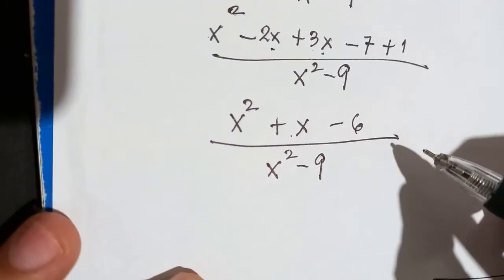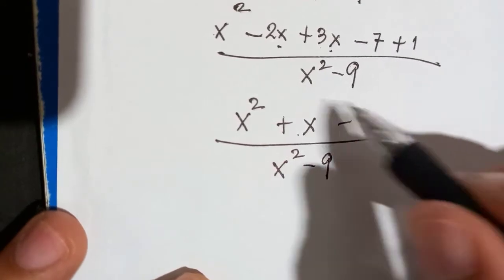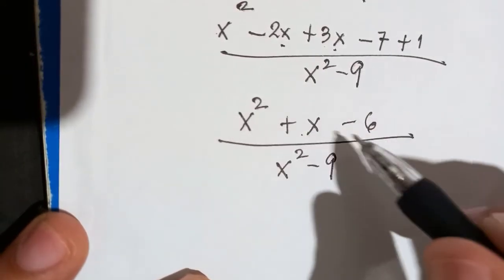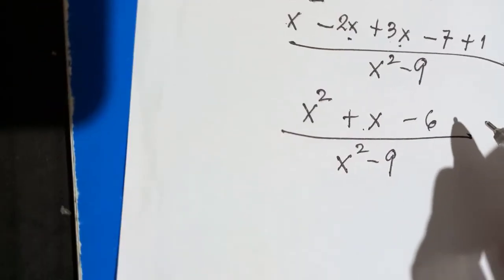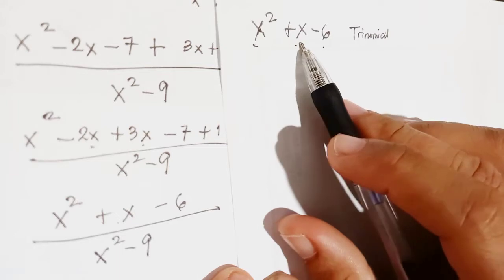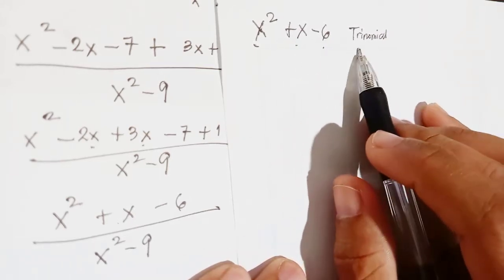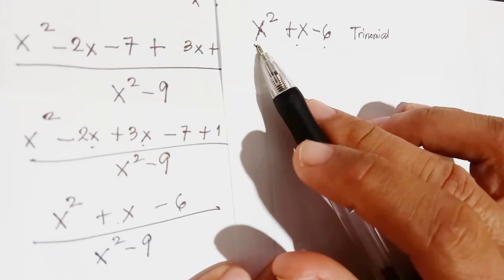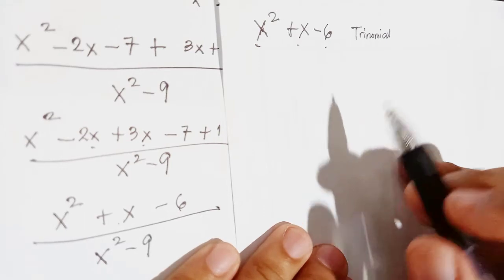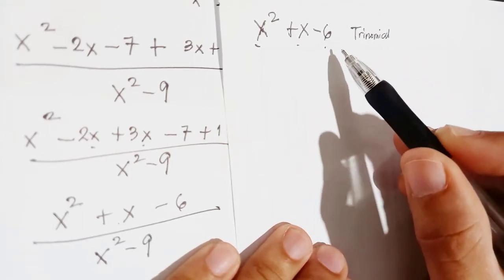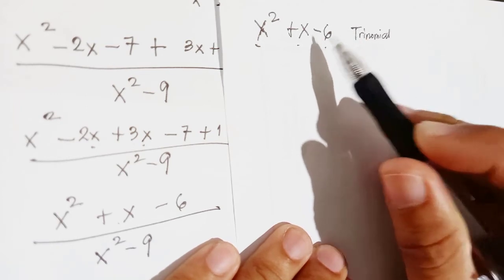This is not yet the answer because they need to be factored. Let us factor first the numerator: x squared plus x minus 6. We will be using the process of factoring a trinomial — why? It has 3 terms. If you forget the process of factoring trinomials, you can check the previous videos from the channel to review.